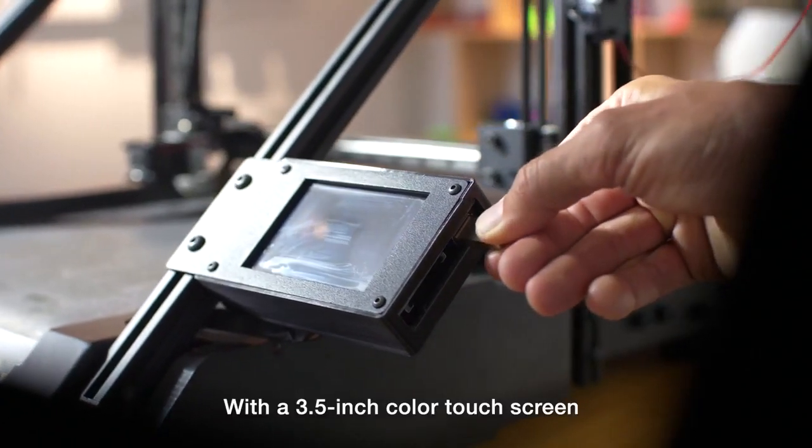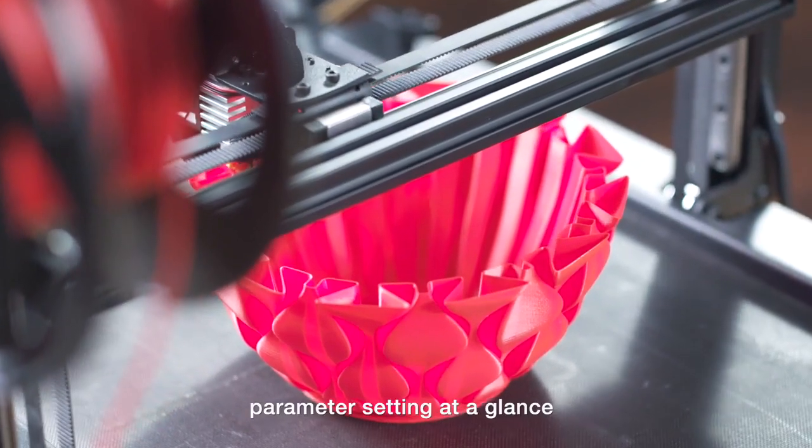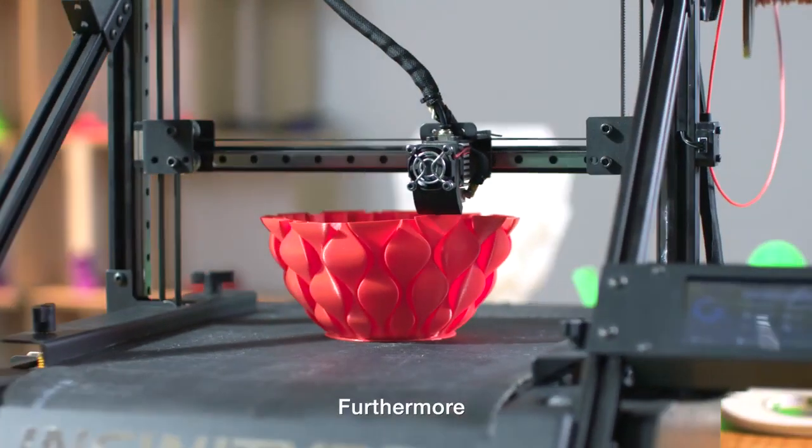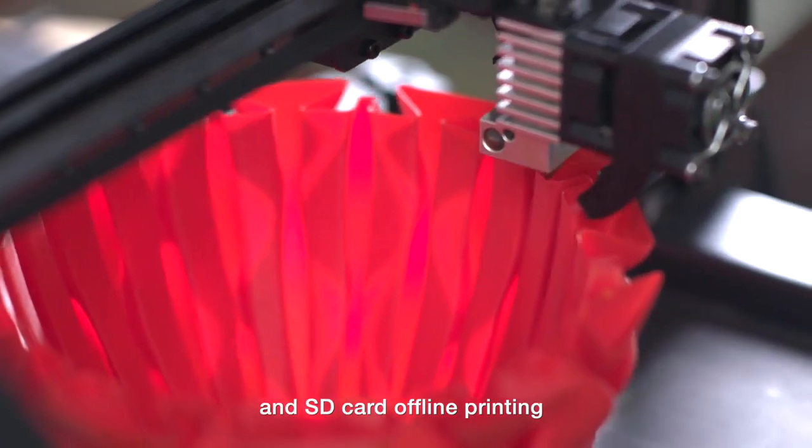With a 3.5-inch color touch screen, you can check the printing status, function display, and parameter settings at a glance. Furthermore, Infinity 3D is compatible with U-Disk and SD card offline printing.